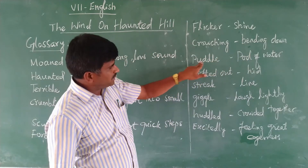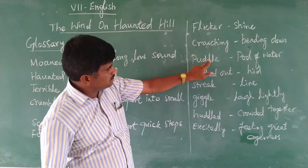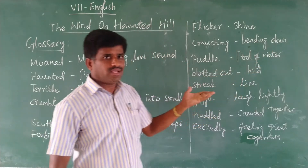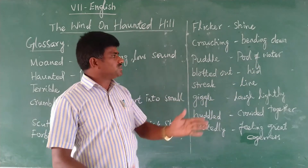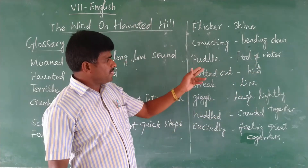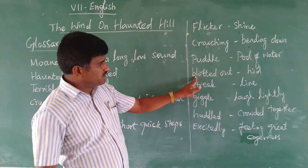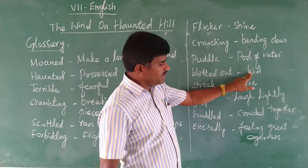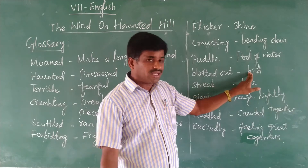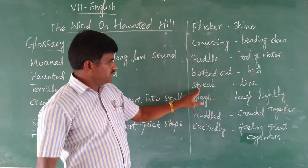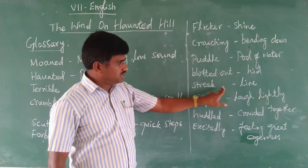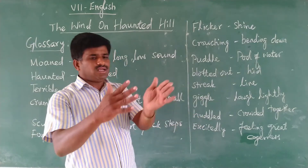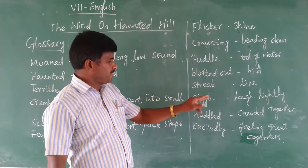The next word is 'Fuddle,' meaning full of water — like a swimming pool. That water is called Fuddle. The next word is 'Blotted out,' which means something is hidden. The next word is 'Streak' — there should be a line, one by one, line by line. That is a streak.